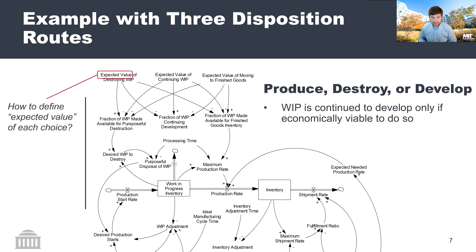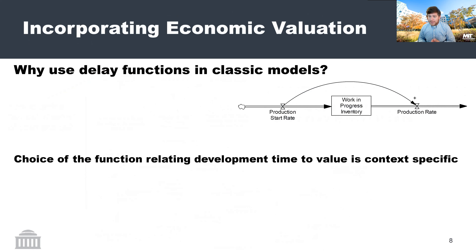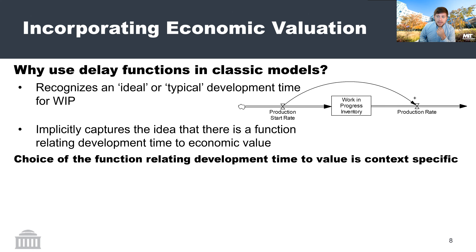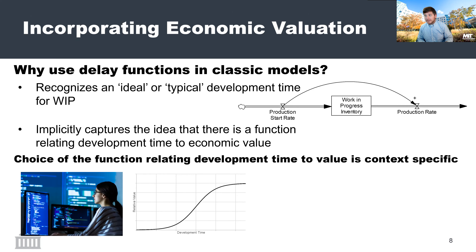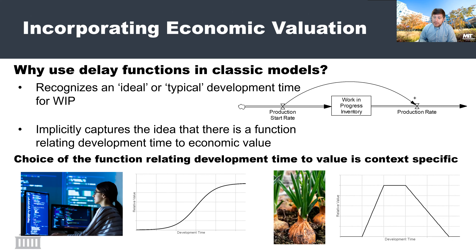When we talk about economic viability, we have to have some concept of value. We can actually go back to some of the original classic models to get a hint — those fixed delays have an implied idea of an ideal or typical development time, some period in which a piece of work in progress is most likely to exit that state, which is most likely the time it is most economically viable to do so. The choice of the function relating time in the work in progress state to the value of the end product might differ under different circumstances. Consider software development, where you might have diminishing returns or increasing then diminishing returns with increasing work in progress time, versus commodity foodstuff, which might have no value at the very beginning, a peak value under some ideal growth time, and then reducing value as it rots in the field or reduces your ability to plant other more seasonally appropriate crops.